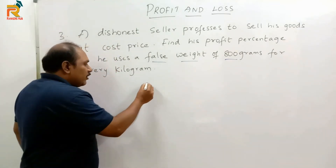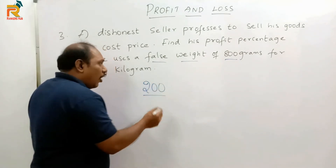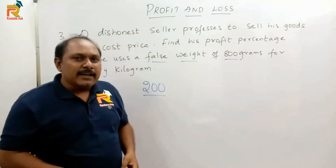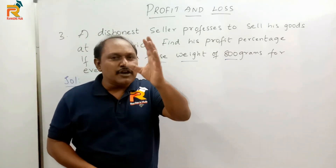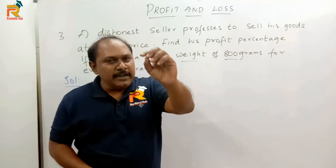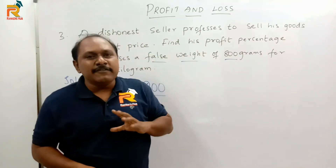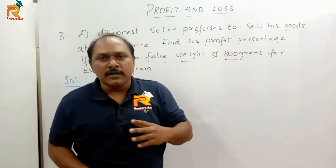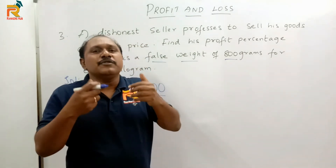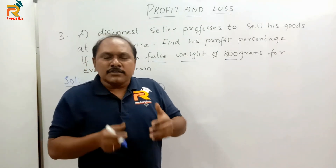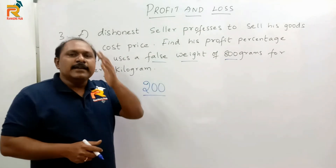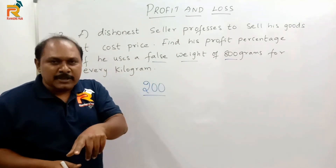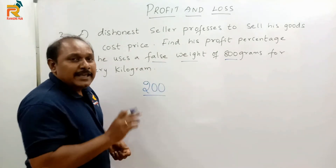Now how many grams is his profit? His profit is 200 grams. This is where students think like a customer and say the base is 1000 grams — but if you think like a shopkeeper, profit or loss is calculated on the quantity you have sold, not on the quantity present with you. You cannot decide profit or loss until you sell the goods. So profit or loss in terms of quantity is calculated on the quantity sold, which is 800 grams.